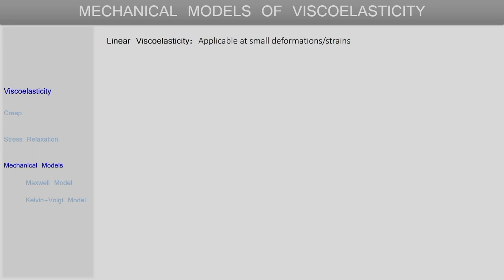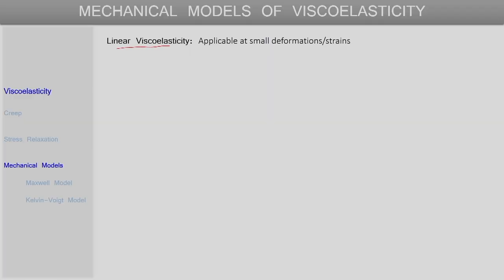From here we will move on to the discussion of a few simple mechanical models of viscoelasticity. We will restrict ourselves to what is called linear viscoelasticity — the individual elastic and viscous responses will be considered linear, and a direct linear combination of these two responses will be assumed to describe the viscoelastic behavior. This kind of linear viscoelasticity is normally valid only when the applied strain or deformation is quite small; as the strain becomes large, this linear assumption will fail.